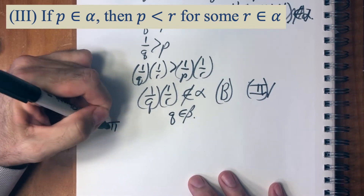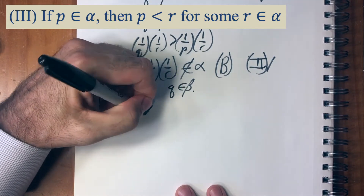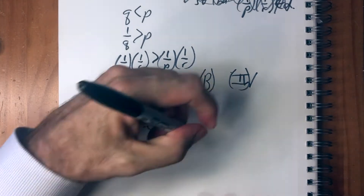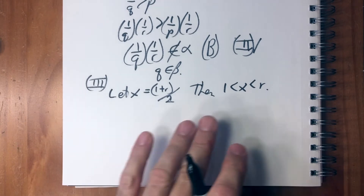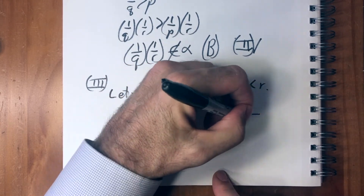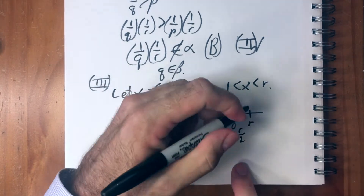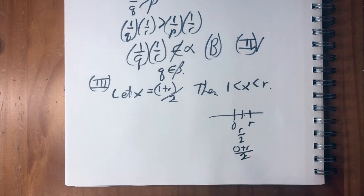For property three, let x equal one plus r divided by two. Then one is less than x is less than r. With addition we just took r divided by two, which was really the average of zero and r. With multiplication it's harder — the halfway point between one and r is one plus r over two, the arithmetic mean. This is a bit uglier but it's the same idea.